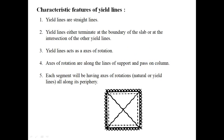The characteristic features of yield lines are as follows. First, yield lines are straight lines. Second, yield lines either terminate at the boundary of the slab or at the intersection of other yield lines. A yield line may terminate at the boundary or at the end — it is not dismissed in between; it should be terminated at the end.